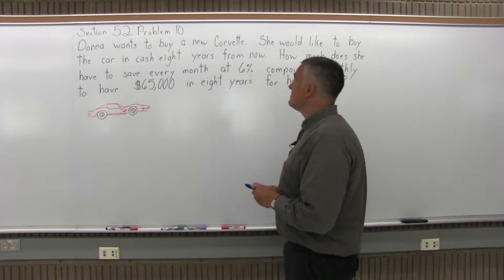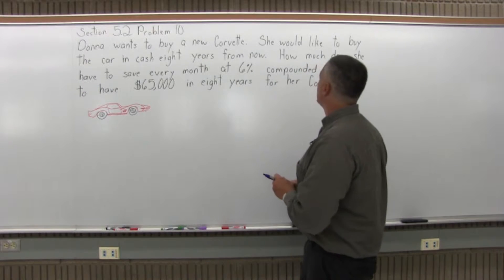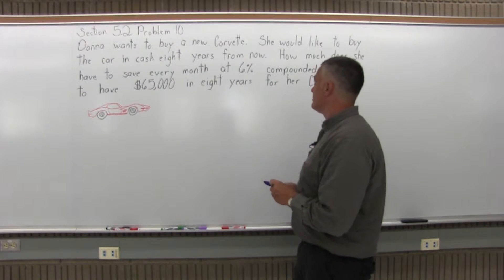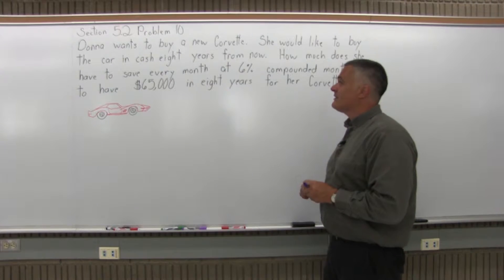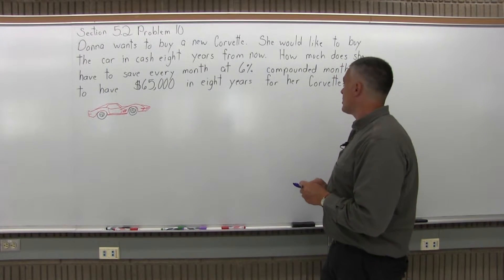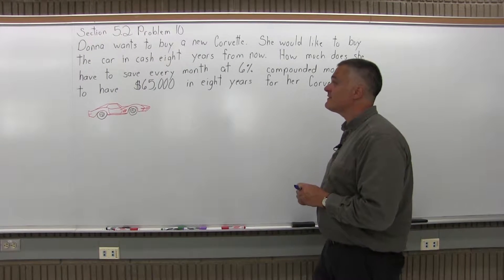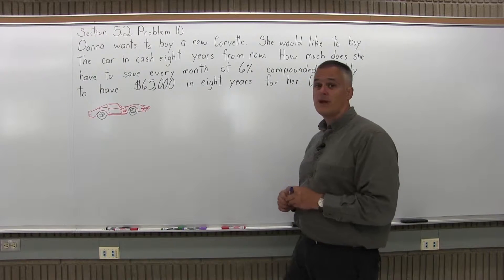It says Donna wants to buy a new Corvette. She would like to buy the car in cash eight years from now. How much does she have to save every month at 6% compounded monthly to have $65,000 in eight years for her Corvette?